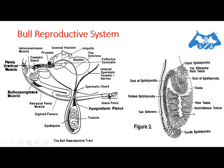The penis is the organ of copulation. Regarding the accessory sex glands: there are two seminal vesicles, two bulbourethral glands — also known as Cowper's glands — which contribute to the semen, and one prostate gland, which also contributes liquid to the semen. So the accessory sex glands include three kinds: seminal vesicles, bulbourethral glands, and prostate glands.